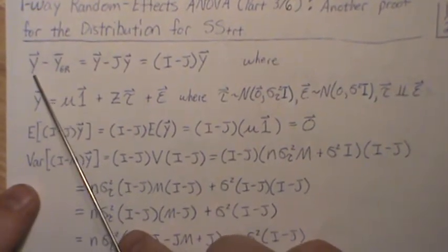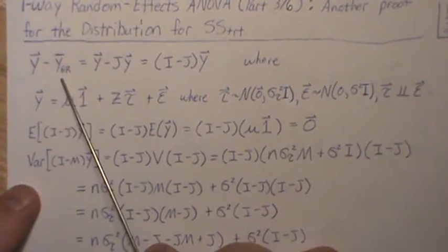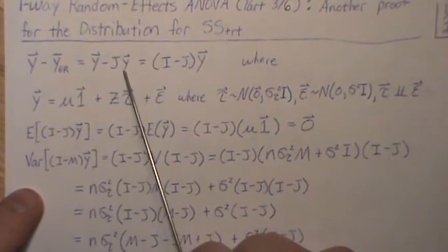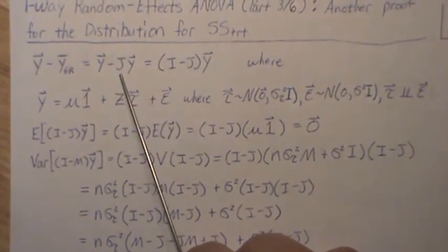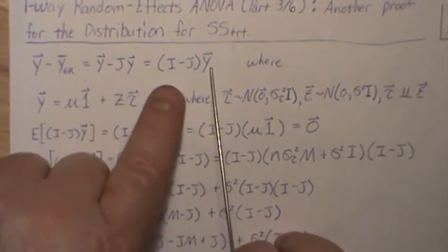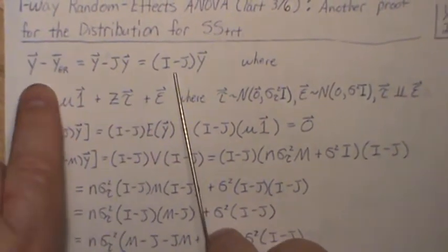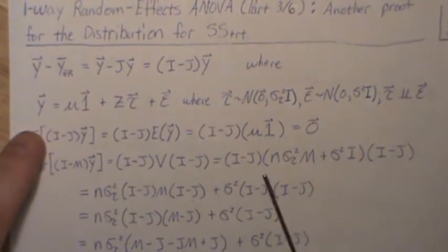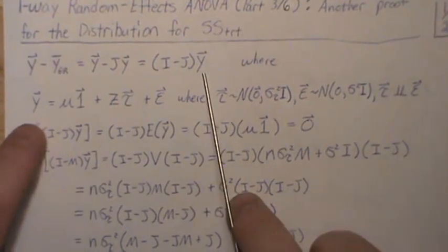So if we look at Y minus the grand mean, the grand mean can be thought of as J times Y. Now J is that perpendicular projection matrix on the column space of ones, but when it's written like this, we can factor out Y. So this difference is (I - J)Y. Stay with me here.